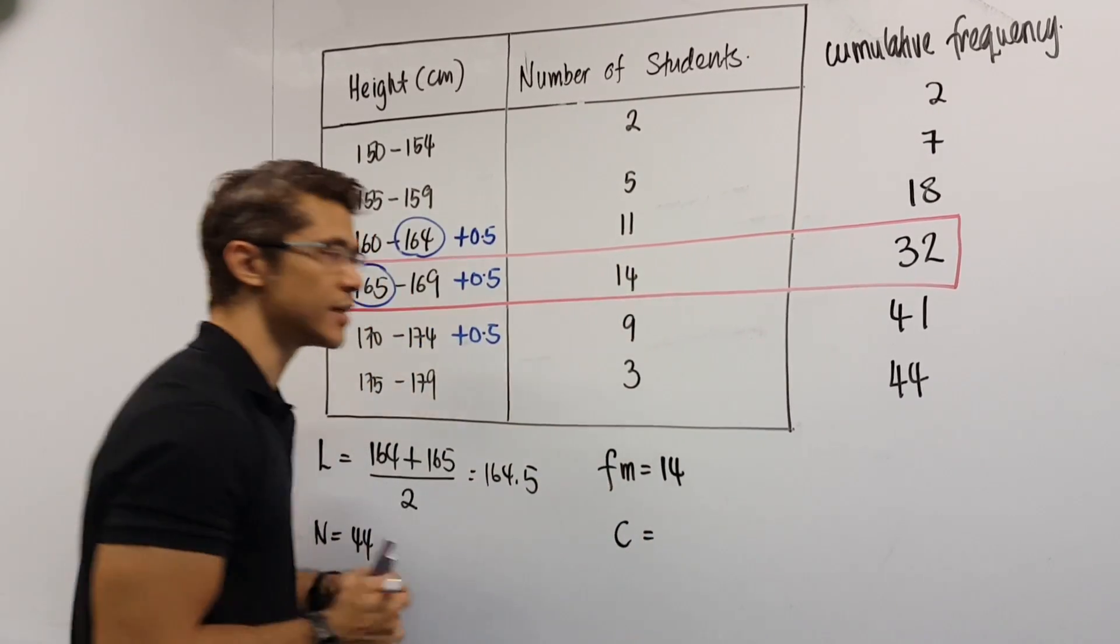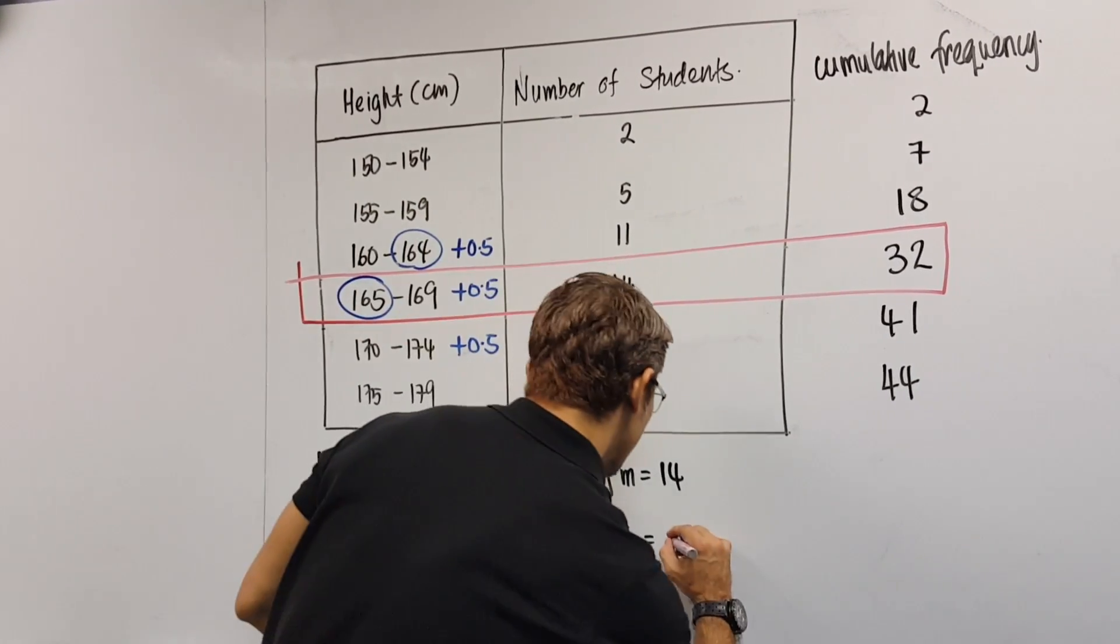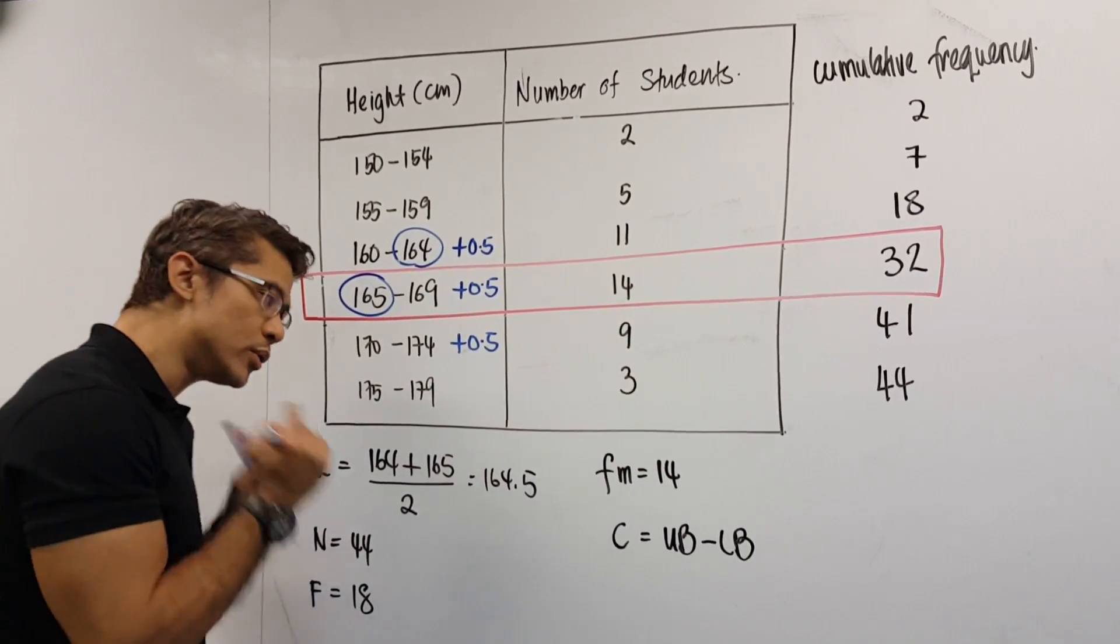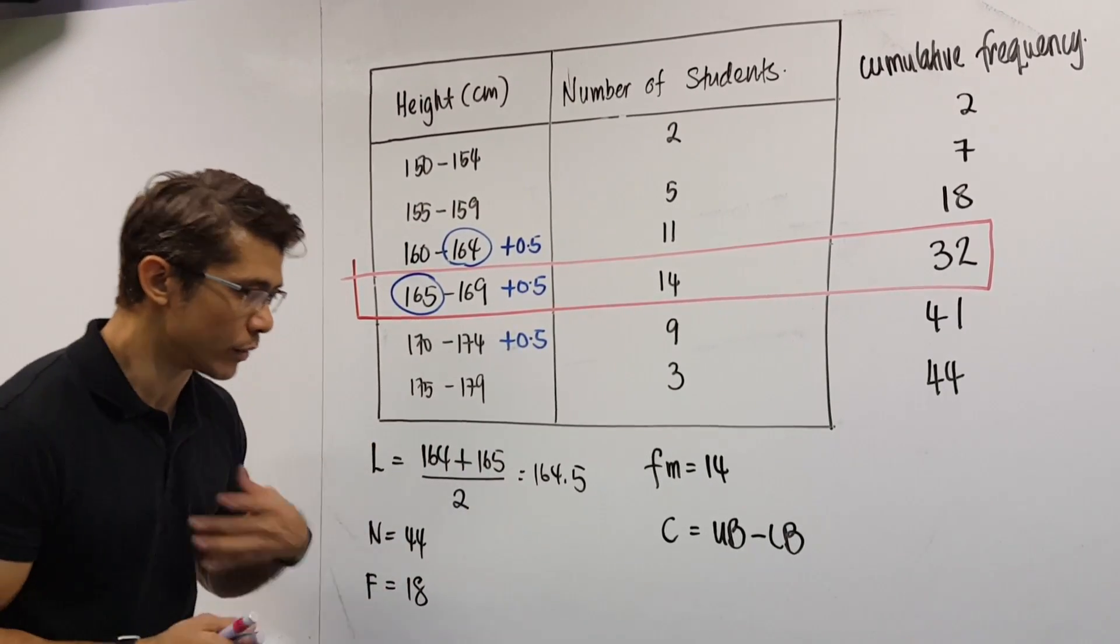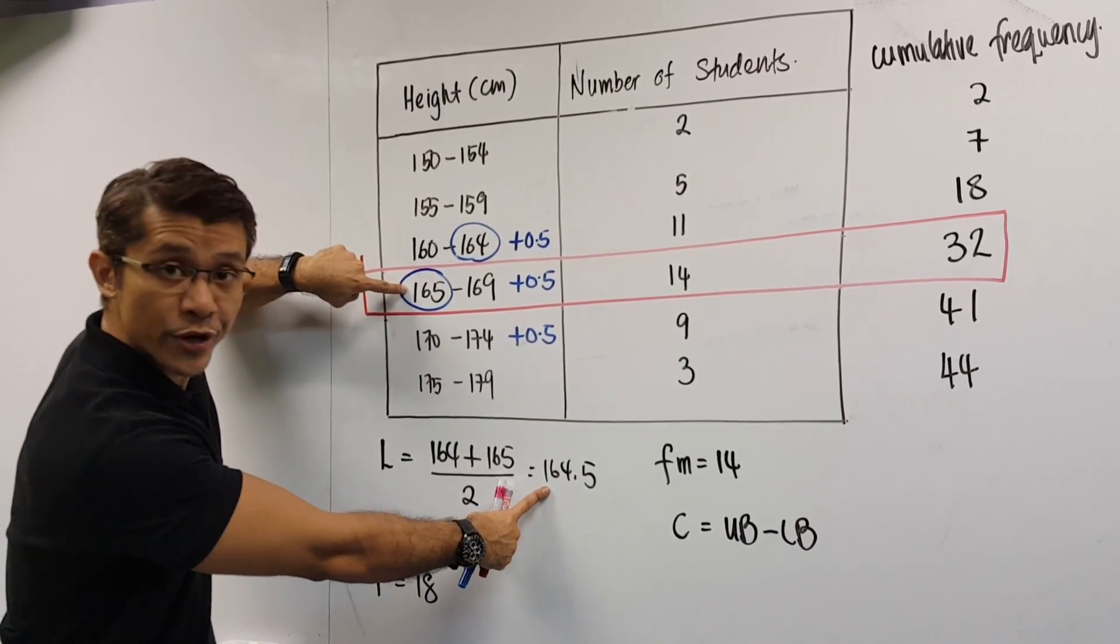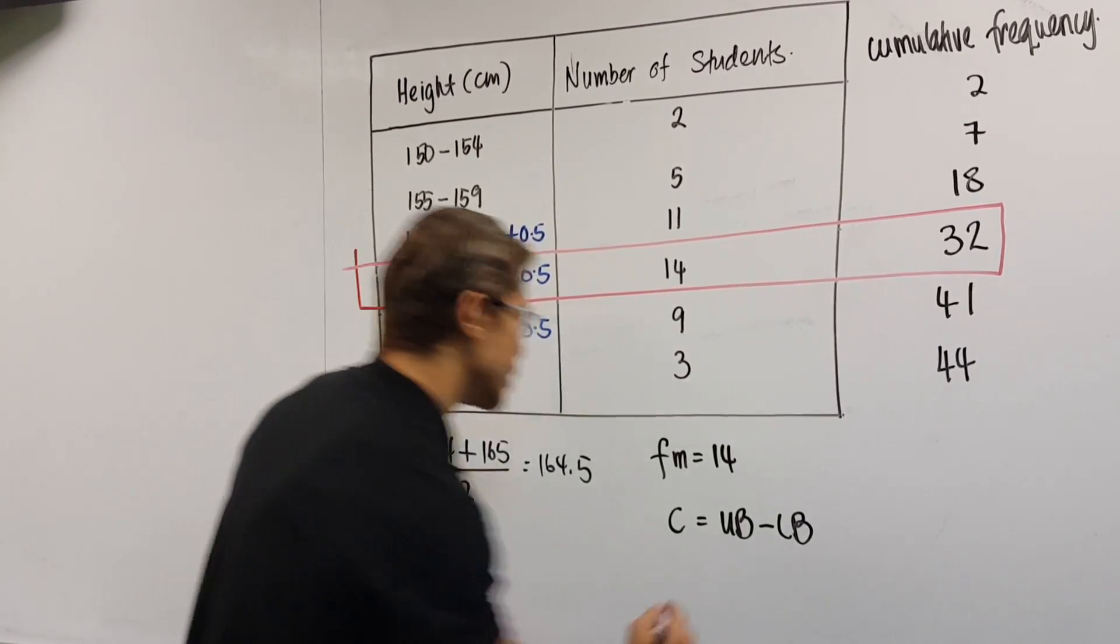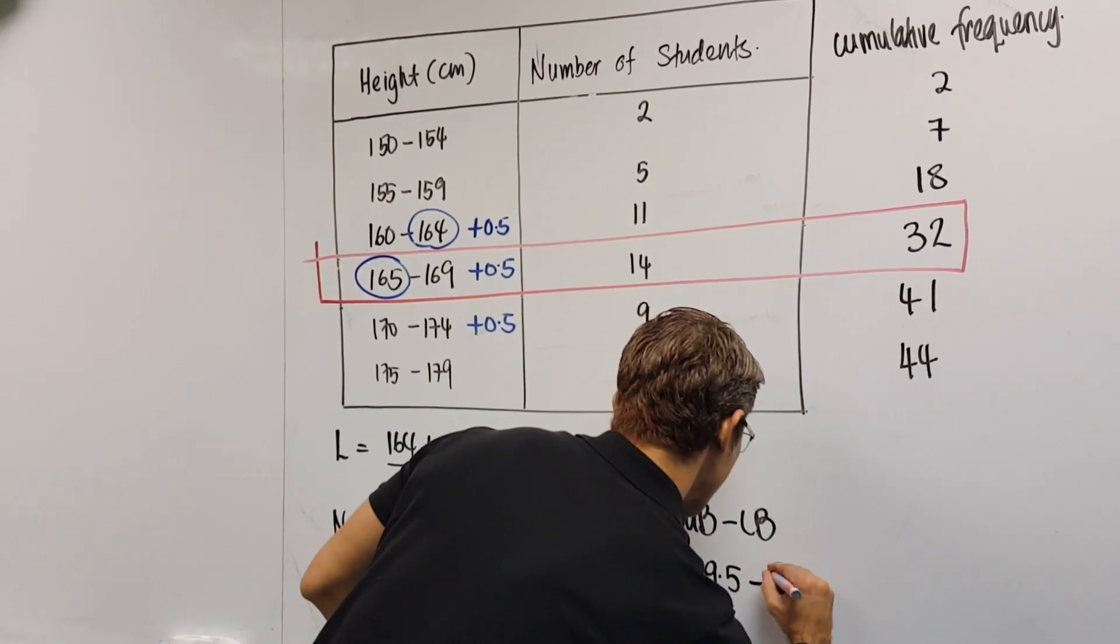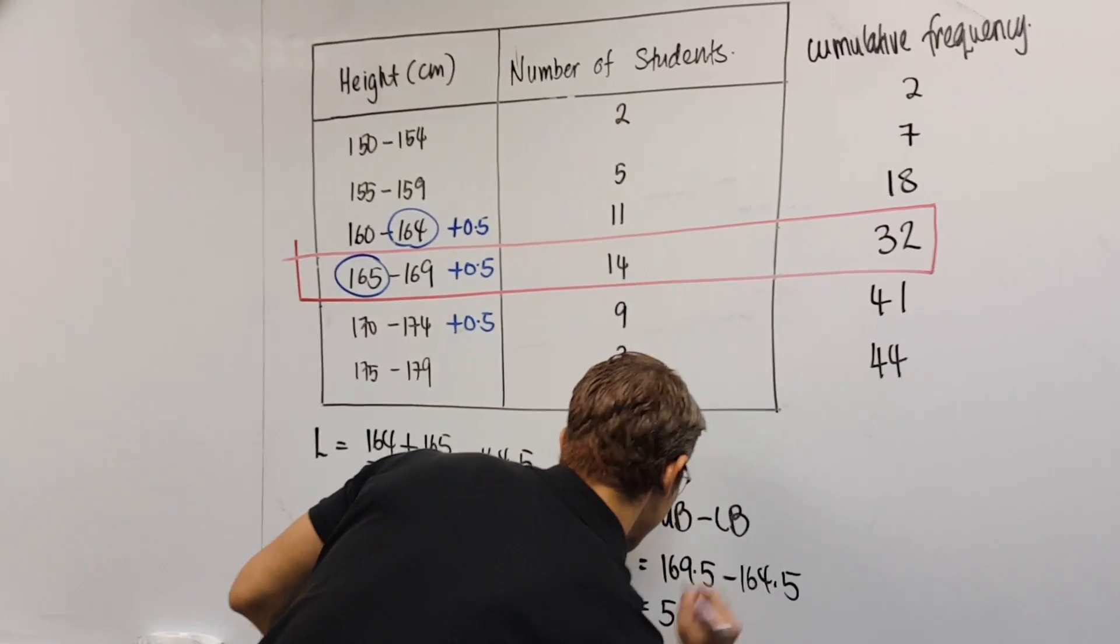And finally, C, which is the class interval size. Now, to find the class interval size of the C number, we need to use upper boundary minus lower boundary. Now, we do know the lower boundary is 164.5. But what about the upper boundary? Well, let's take a look at the box. Remember, 164.5 is the lower boundary. The upper boundary is 169 plus 0.5. Which means it's 169.5 minus 164.5. So we have the C value to be equal to 5.